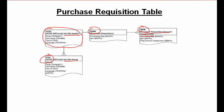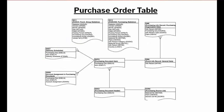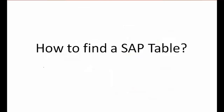For purchase orders, the main tables are EKKO (purchase document header) and EKPO (document item/line item). Header data is stored in EKKO and item data in EKPO. These are linked to many other tables — for example, the source list table, and EKPO also links to info record data via EINA, which connects to further related tables.